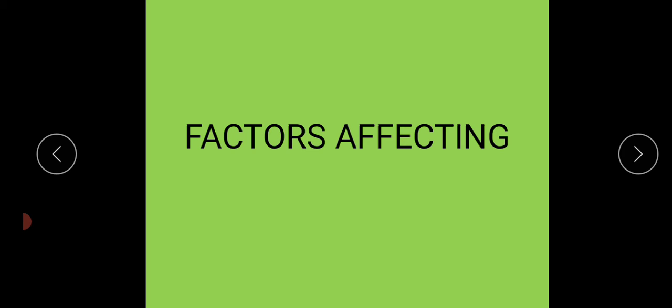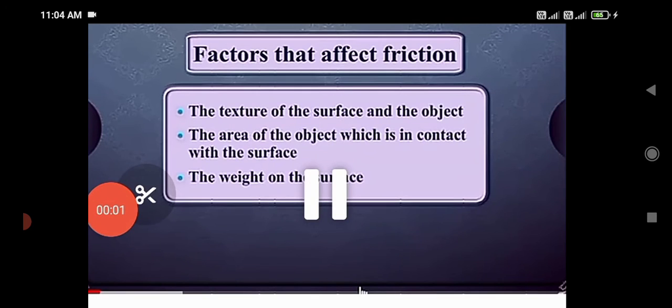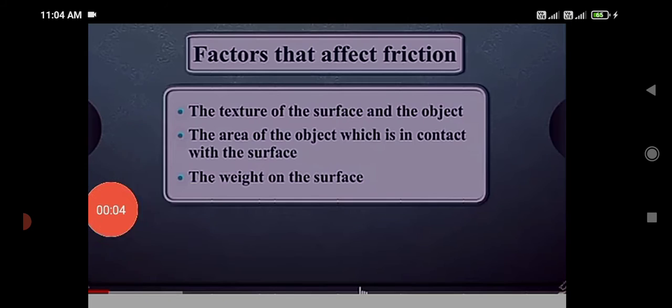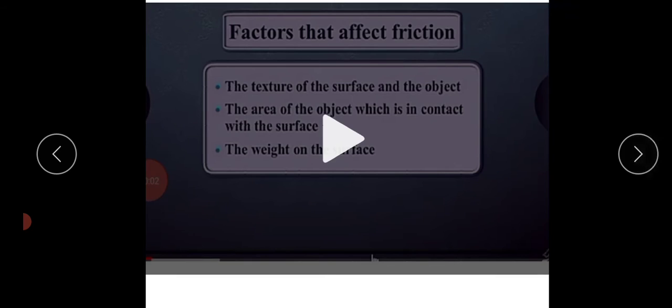Next: factors affecting friction. What are the factors affecting friction? First, the texture of the surface and object — texture of the surface means the nature of the surface and the object. Second, the area of the object which is in contact with the surface — what type of area is in contact, less area or more area. Third, the weight on the surface — if the object has more weight, then friction is more; if the object has less weight, friction is less. So: nature of the surface, area of the surface, weight of the object — friction depends on these three factors.